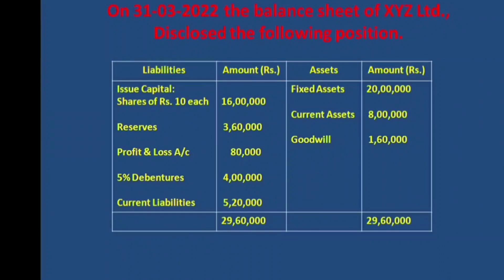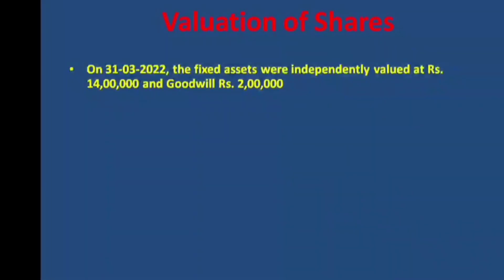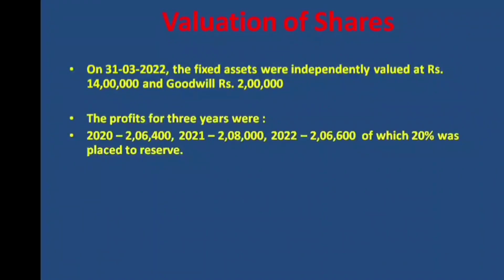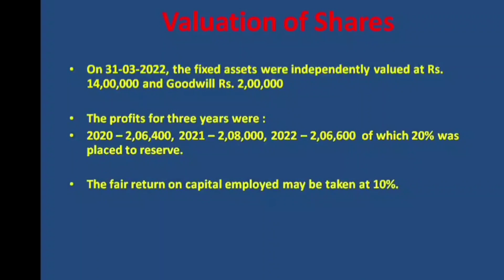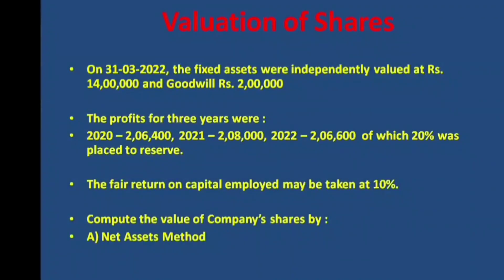Assets: fixed assets, 20 lakhs; current assets, 8 lakhs; goodwill, 1,60,000. Total: 29,60,000 each side. On 31st March 2022, fixed assets were independently valued at 14 lakhs and goodwill at 2 lakhs. Profits for 3 years: 2020 — 2,64,000; 2021 — 2,80,000; 2022 — 2,66,000, of which 20% was placed to reserve. Fair return on capital employed may be taken at 10%.